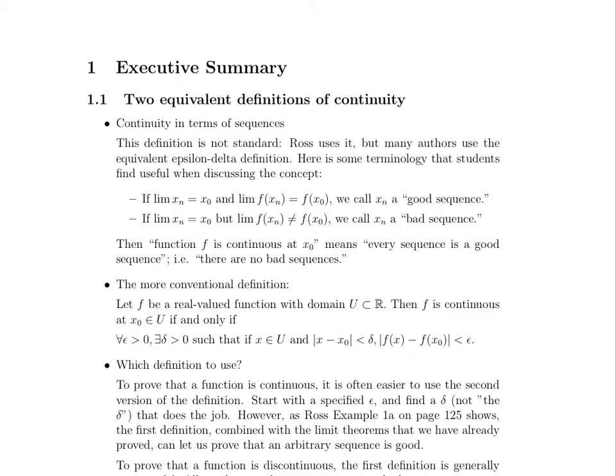Now the more conventional definition is the following. This is the epsilon delta definition of continuity that you'll see referred to in both small group problems and sample problems and your homework. It says let f be a real valued function with domain U being a subset of the real numbers. Then f is continuous at x naught, which is an element of U, if and only if for all epsilon greater than zero, there exists a delta greater than zero such that if x is in U and the absolute value of x minus x naught is less than delta, then the absolute value of f of x minus f of x naught is less than epsilon.